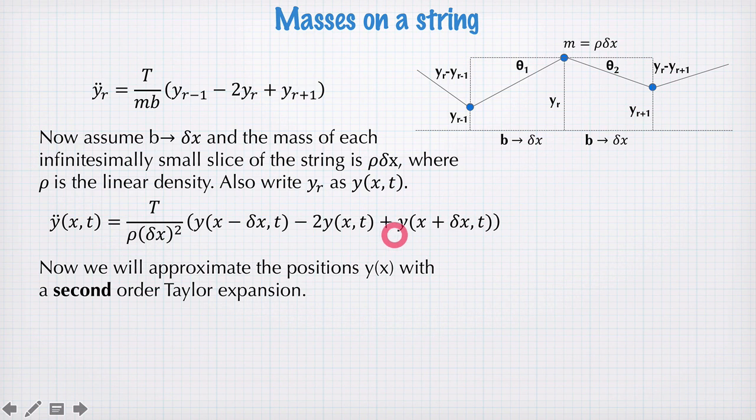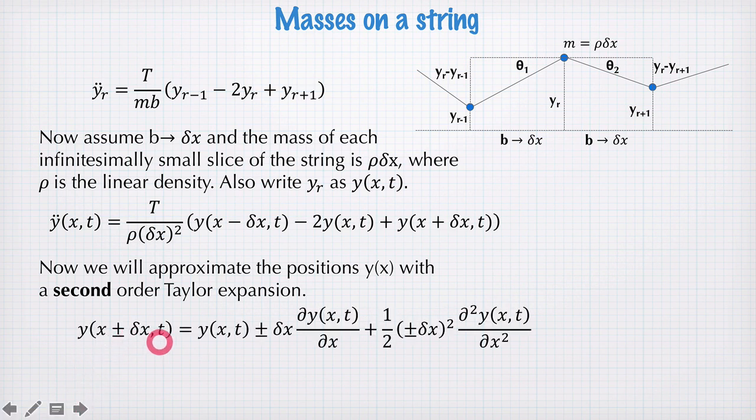Now we're going to expand each of these to second order in Taylor expansion. And we need second order, otherwise there are too many cancellations and we end up with a zero. So to second order, the Taylor series, we have y(x,t). Then we have a plus or minus δx times the first spatial derivative.